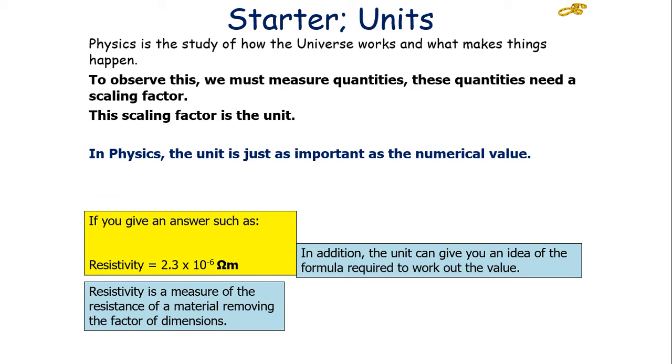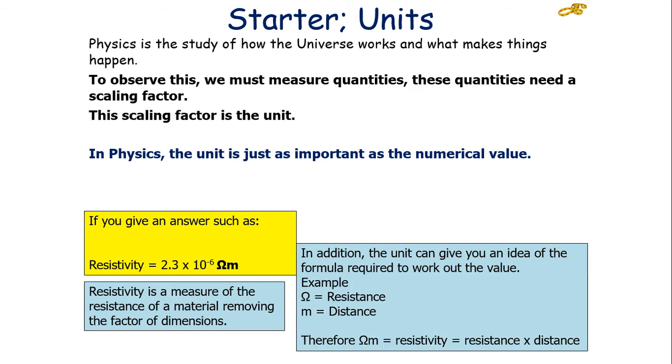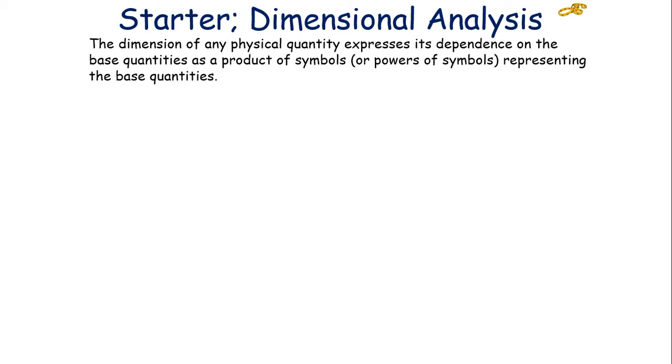In addition, the unit can give you an idea of the formula that you require to work out this value. For example, we know that resistivity is measured in ohm meters. So we therefore know that resistance times by length will equal the resistivity, and you can work out what the formula of that quantity is going to be.